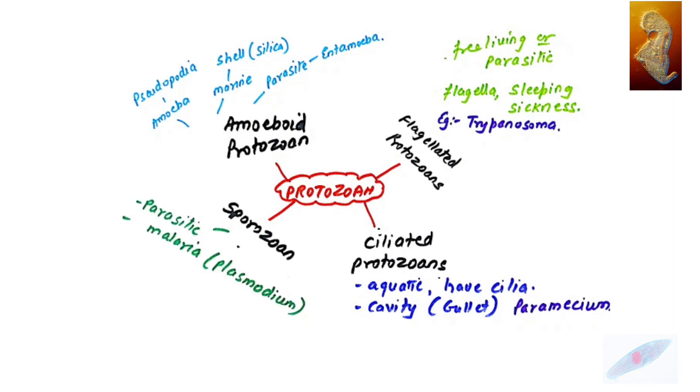When you talk about sporozoans, they are parasitic in nature. An example is Plasmodium, one of the most dangerous protozoans which causes malaria. So these are the different types of protozoans that we are supposed to take care of: amoeboid protozoan, flagellated protozoan, ciliated protozoan, and sporozoan.